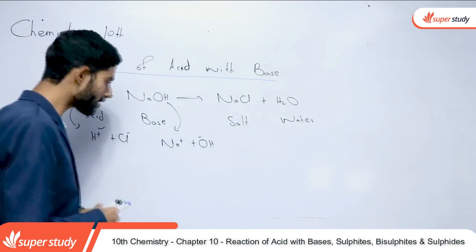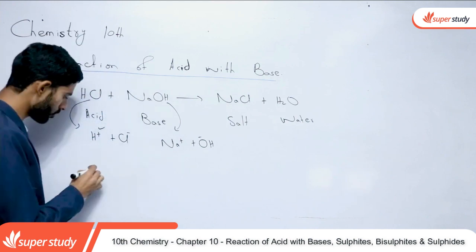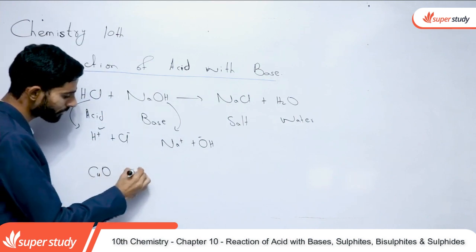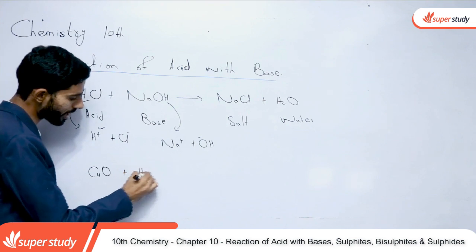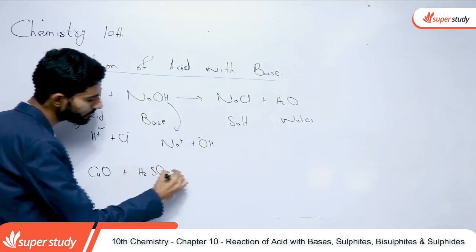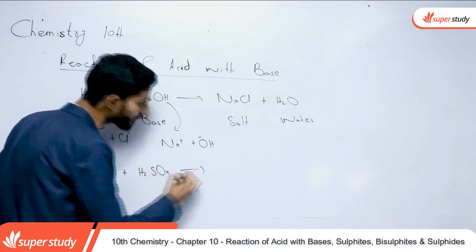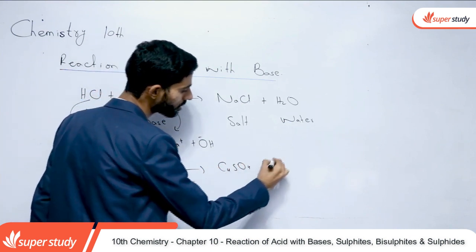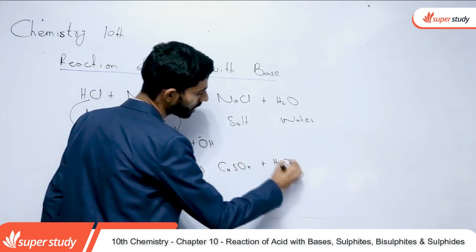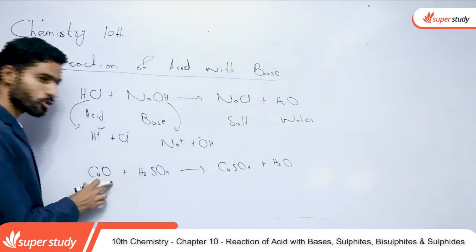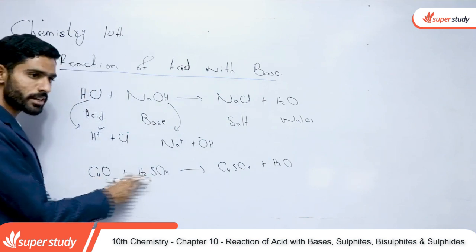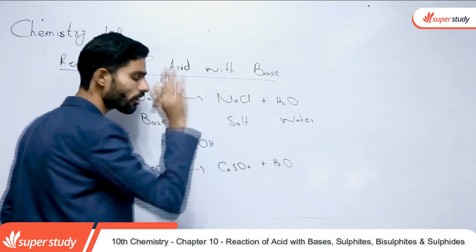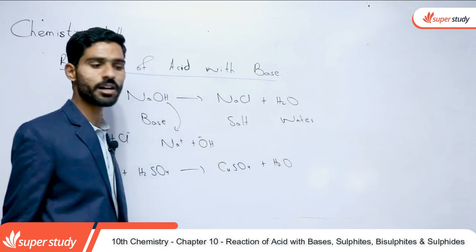If you look further, let's suppose you are reacting cuprous oxide with sulfuric acid H₂SO₄. In this reaction, you also get copper sulfate, which is a salt, and water. So with copper oxide reacting with sulfuric acid, you will get copper sulfate and water as products.